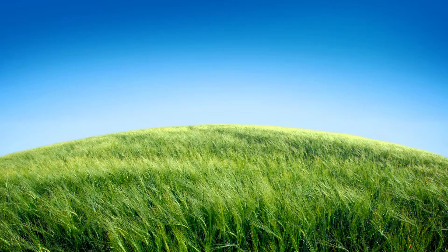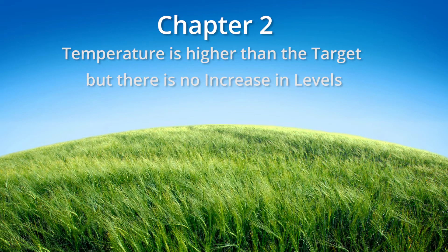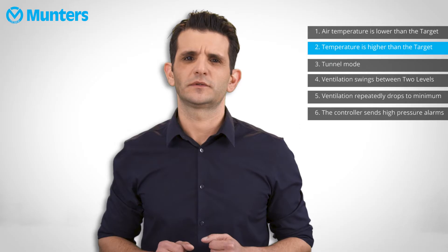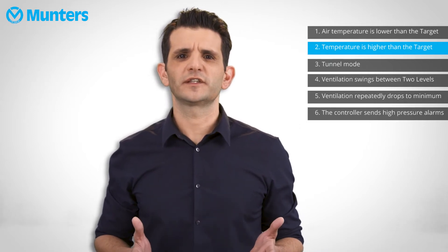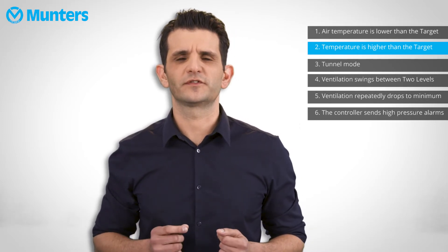Next, we'll be talking about the opposite situation. The precision temperature is higher than target, but there is no increase in levels. The air temperature is higher than target temperature, so why didn't the ventilation levels increase accordingly? There can be a few reasons for this phenomenon. The first and most common reason is that you're at your maximum level.